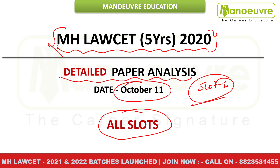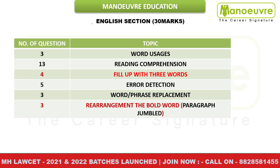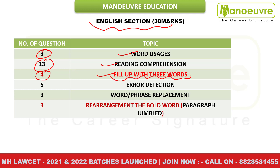So let's start. Very first, let me talk about the English section — 30 marks paper. Word uses: 3 questions. Reading comprehension: 13 questions, with 2 reading comprehensions of 7 questions and 6 questions. Fill-in-the-blank type questions: 4 questions. And a new type of fill-up question which was different — 3 words were given and you had to find which is the accurate word to fill in the blanks.